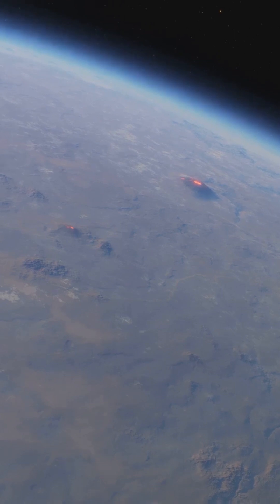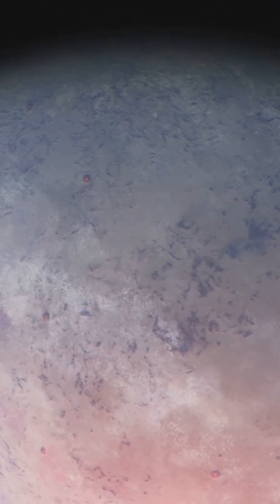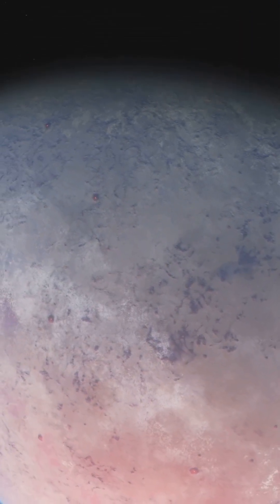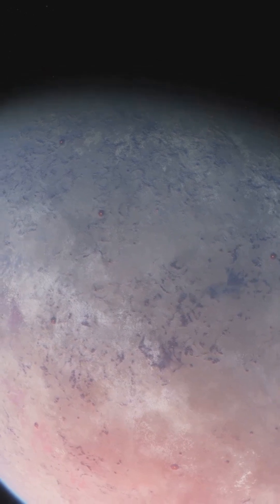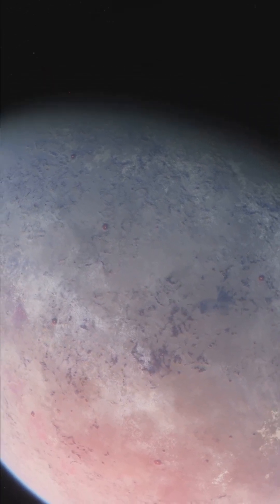WASP-18b is a gigantic planet about 325 light years from Earth. It's a hot Jupiter, which means it's big, over 10 times the mass of Jupiter, and orbits super close to its star.